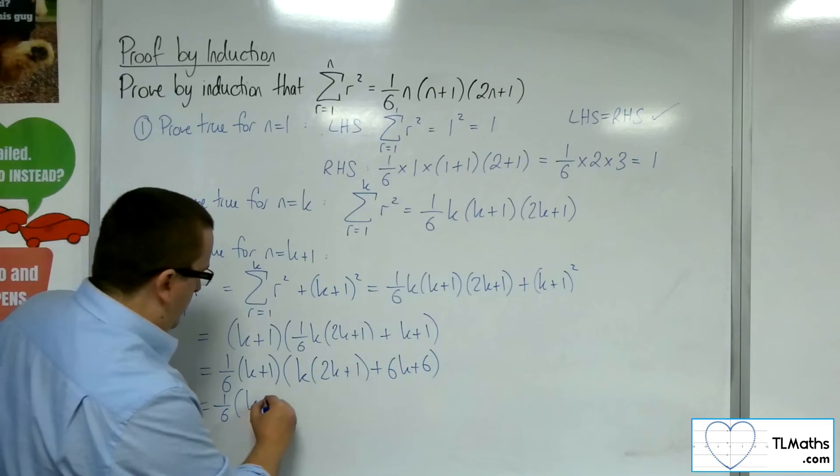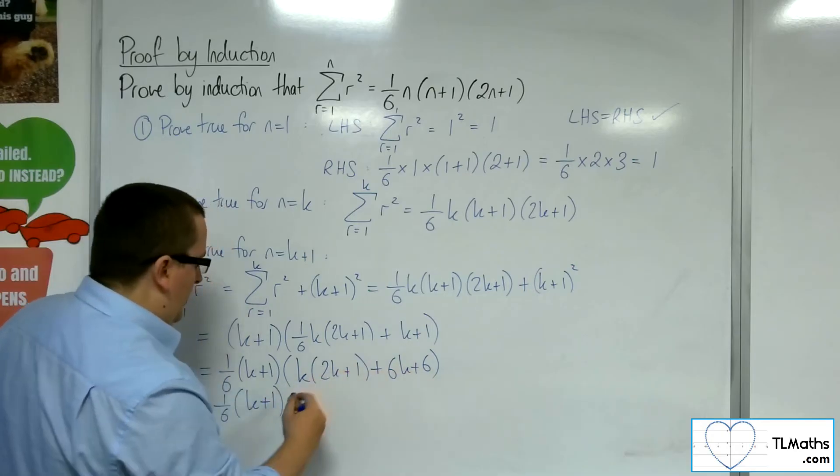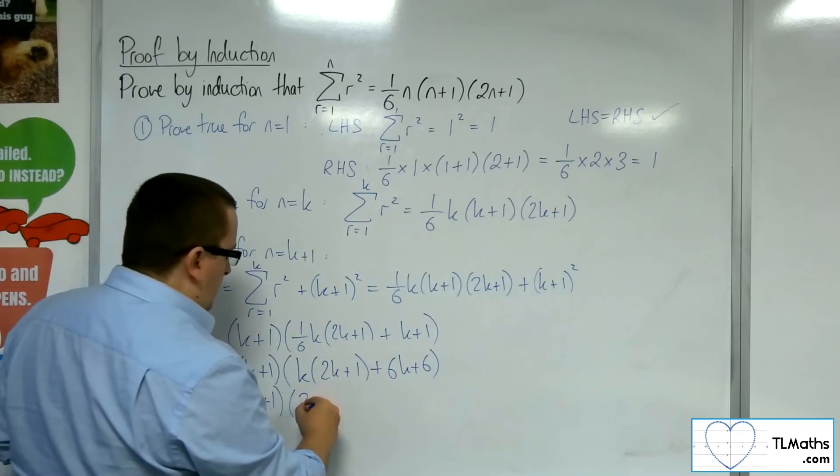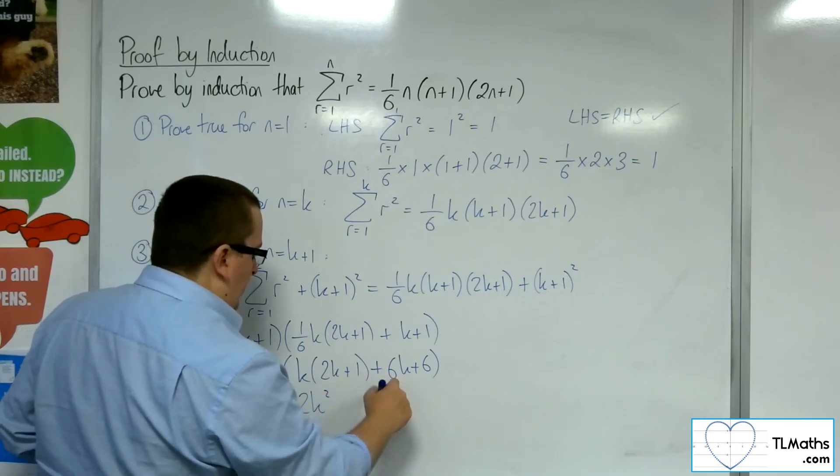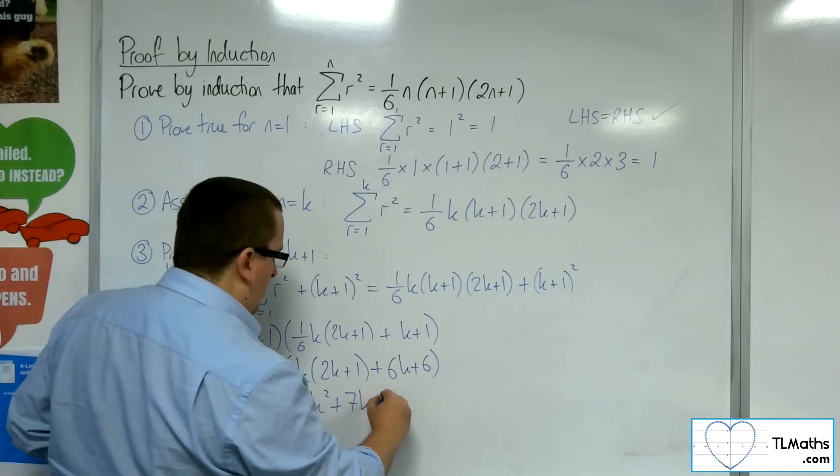So, if I expand what's inside this bracket, I'm going to get 2k squared, I've got a k there, plus 6k, so 7k, plus 6.